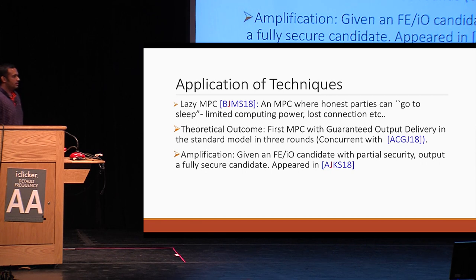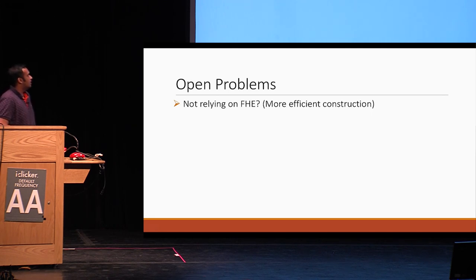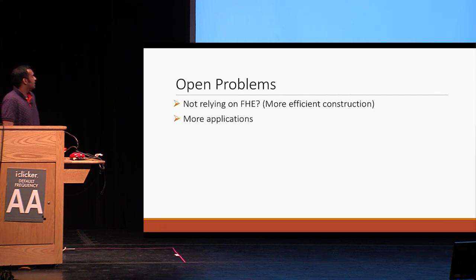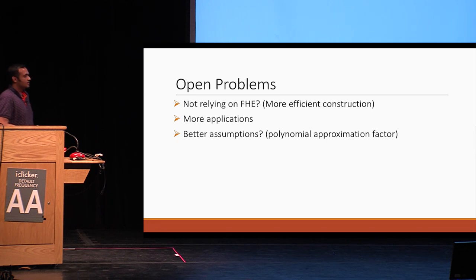Let me end with some open problems. We use FHE as a tool to build the universal thresholdizer, but can we build it without relying on the heavy machinery of FHE? Can we give a more efficient construction, maybe for simpler classes of functionalities? Are there more applications of threshold FHE and the universal thresholdizer? And another interesting question is: can we get better assumptions — in particular, can we get this from LWE with polynomial approximation factor? With this, I would like to conclude. Feel free to ask questions.